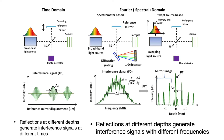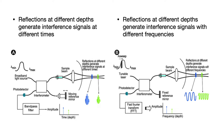The swept-source, instead of using a broadband light source — which in spectral domain is considered broadband — uses a light source that sweeps through various wavelengths over time. That is what gives us the ability to reach greater depths and achieve better depth of imaging.